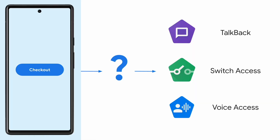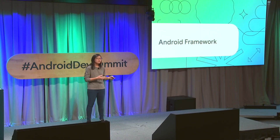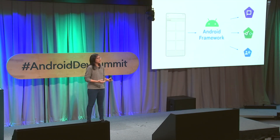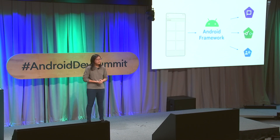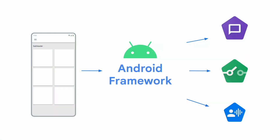So the question becomes: as an Android developer, we only built our simple app in one way and didn't really think about how it would interact with these different accessibility services. So how does that actually work? Well, most of the work starts in Android Framework. What Android Framework does is it takes a look at your app and translates it in a way that allows different accessibility services to adapt your app based on the user's needs.